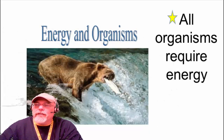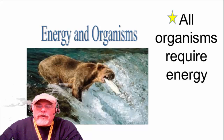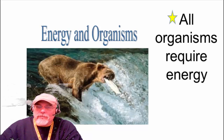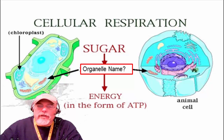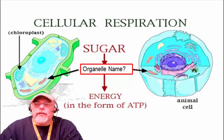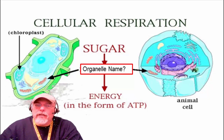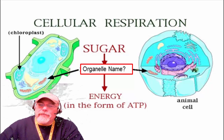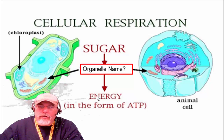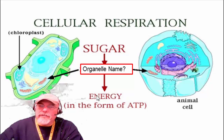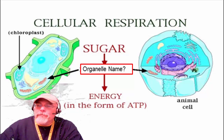First of all, the main idea here is that all organisms require energy, and there are going to be various ways that organisms will acquire their energy. On a cellular level, this might be something you could remember from last year — there is a specific organelle that can convert glucose into ATP very efficiently.